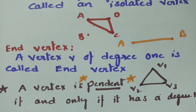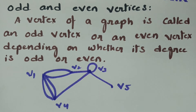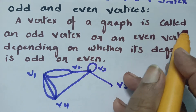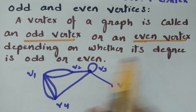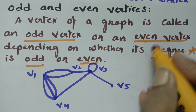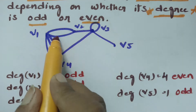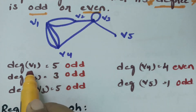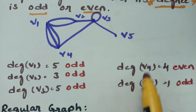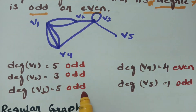What about odd and even vertices? A vertex of a graph is called an odd vertex or an even vertex depending upon whether its degree is odd or even. For this diagram, v1 has 5 edges incident to it — that is an odd degree — so v1 is an odd vertex. Similarly, v2 is odd, v3 is odd, v4 is even, and v5 is odd.